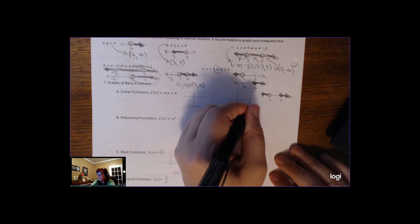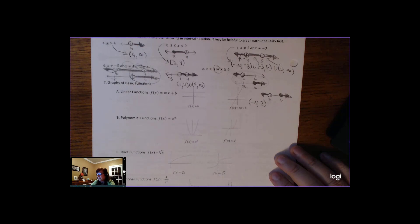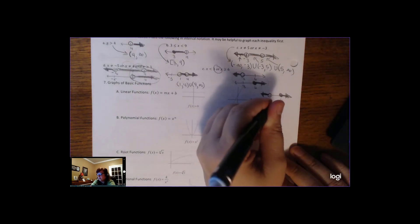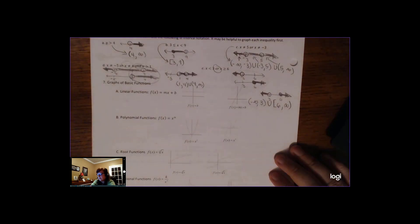But remember, we're practicing interval notation. So what this would be in interval notation would be negative infinity to 3 parentheses union bracket 6 to infinity. So that was a quick review on interval notation.